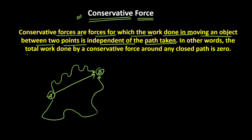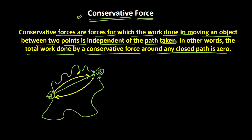Also, the total work done by the conservative force around any closed path is 0. What this means is that, let's say I am going from A to B and I am doing some work. When I am coming back from B to A, I am doing the same work but in the opposite direction. So the total work done would be 0.